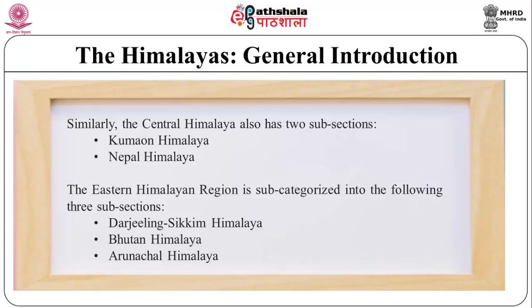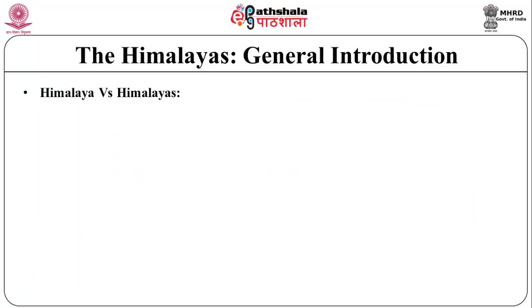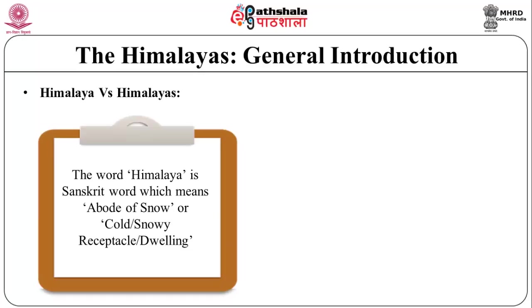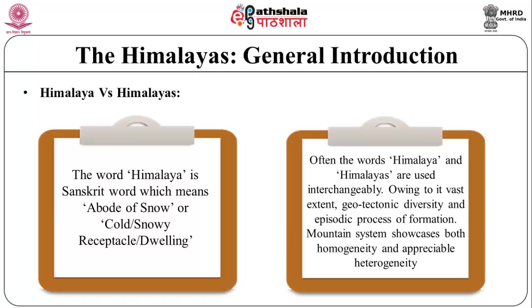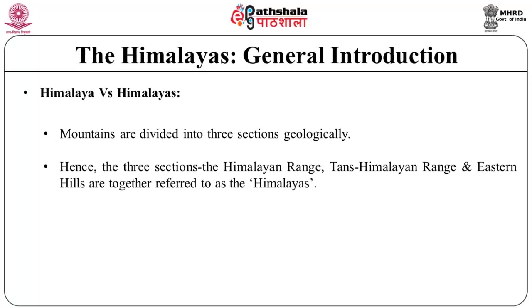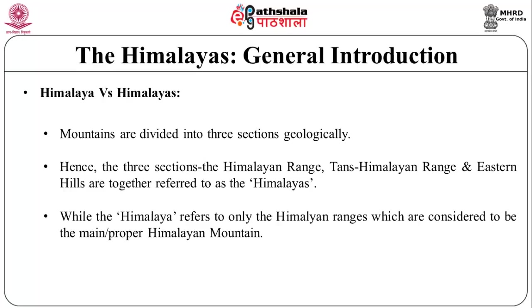The word 'Himalaya' is a Sanskrit word meaning the abode of snow, or cold snowy receptacle. Often the words 'Himalaya' and 'Himalayas' are used interchangeably. Owing to its vast extent, geotectonic diversity, and episodic process of formation, the mountain system showcases both homogeneity and appreciable heterogeneity. The three sections — Himalayan range, trans-Himalayan range, and eastern Himalayas — are together referred to as 'Himalayas,' while 'Himalaya' refers only to the main Himalayan range.